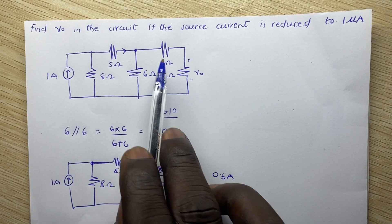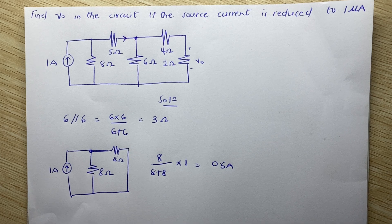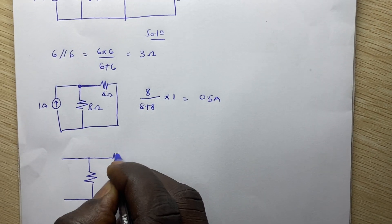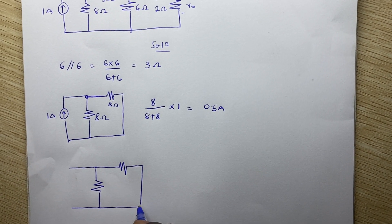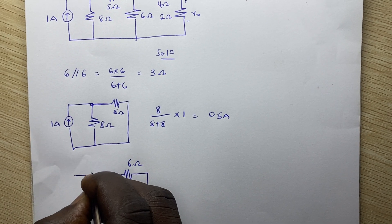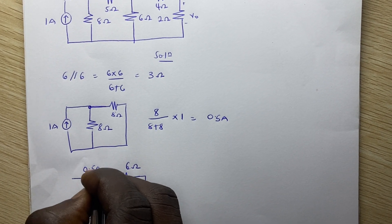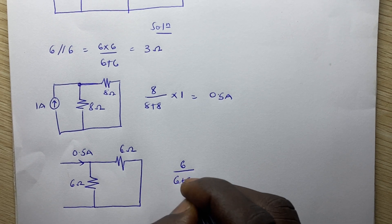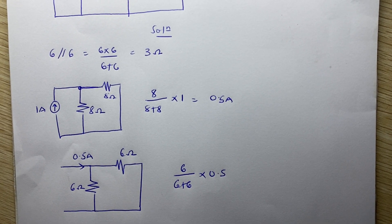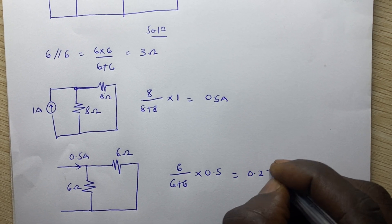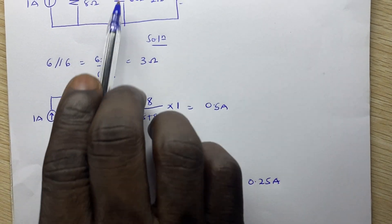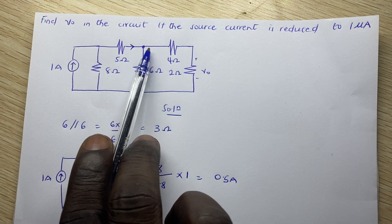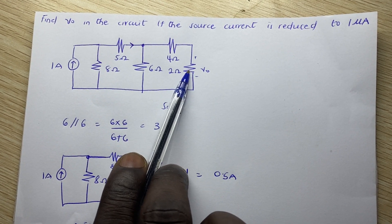When 0.5 amps reaches this point, we perform another current divider. We have 6 ohms on each side, so the two parallel branches each have 6 ohms. Applying the current divider again — the opposite branch (6 ohms) divided by the sum (12 ohms) multiplied by 0.5 amps — gives us 0.25 amps. Since these two resistors are in series, the same 0.25 amps flows through both.